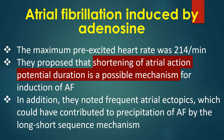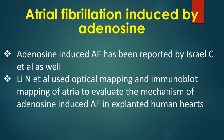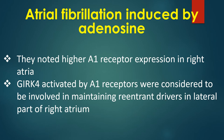The maximum pre-excited heart rate was 214 per minute. They proposed that shortening of atrial action potential duration is a possible mechanism for induction of AF. In addition, they noted frequent atrial ectopics which would have contributed to precipitation of AF by the long-short sequence mechanism. Adenosine-induced AF has been reported by Israel and colleagues as well. Lee and Associates used optical mapping and immunoblot mapping of atria to evaluate the mechanism of adenosine-induced AF in explanted human hearts. They noted higher A1 receptor expression in right atria. G protein-coupled, inwardly rectifying potassium channels activated by A1 receptors were considered involved in maintaining reentrant drivers in the lateral part of the right atrium.